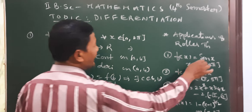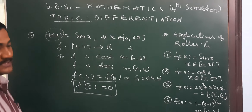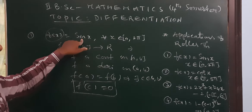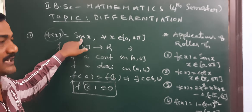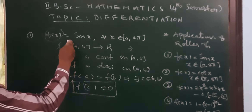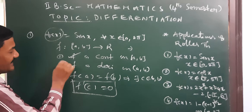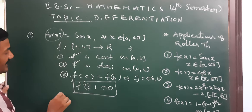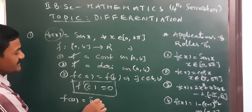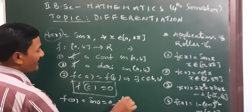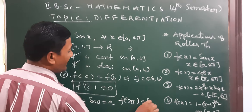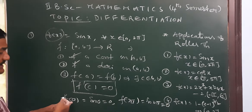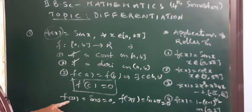So, first of all, we are checking this function f(x). The sine function is always continuous and derivable, because the derivative of sine is cos x, and every differentiable function is continuous. Therefore, f(x) satisfies the first condition and second condition. Now we check the third condition: f(0) = sin(0) = 0, and f(2π) = sin(2π) = 0. So f(a) = f(b); the third condition also holds.